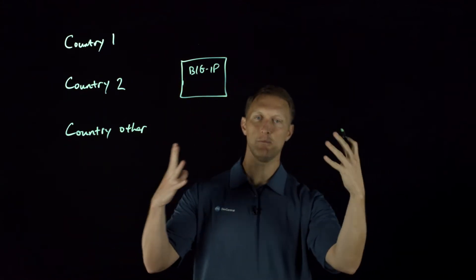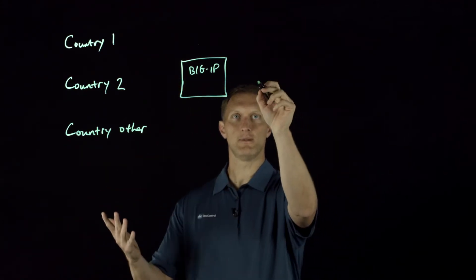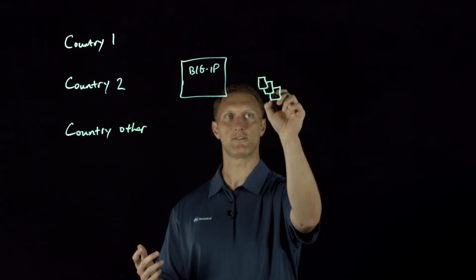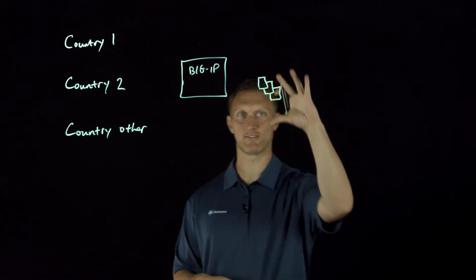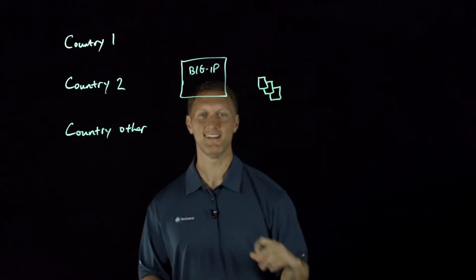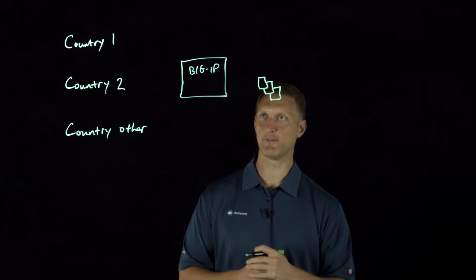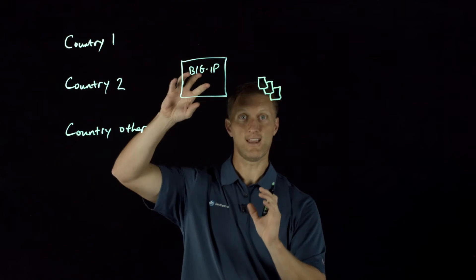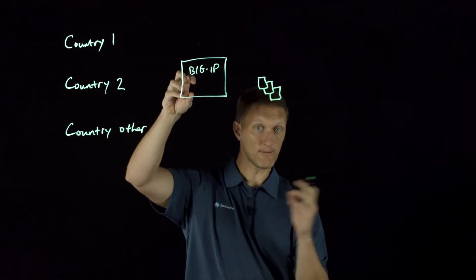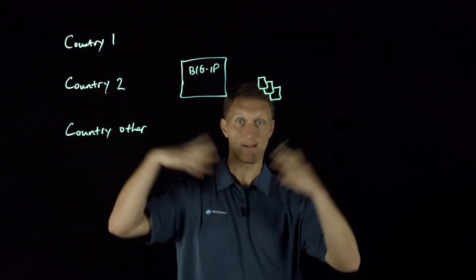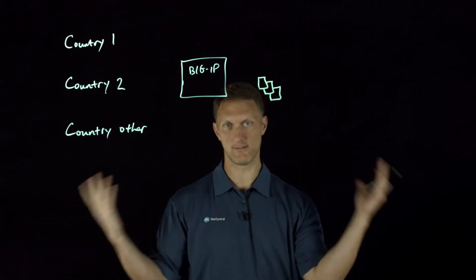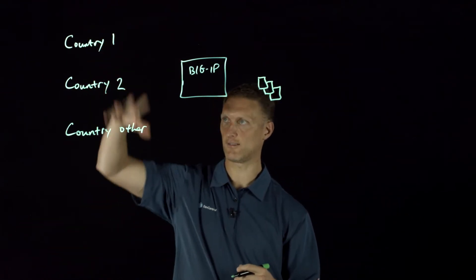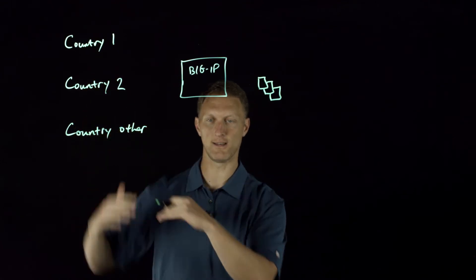What we established is — and let me write back here — these are your backend web application servers that everyone needs to access. This is your fancy web app that you want everyone to have access to. Country one, you want a specific AFM policy. Country two, you want a different AFM policy. And for all other countries, you want yet another AFM policy. Of course you can add or remove however many layers you need.